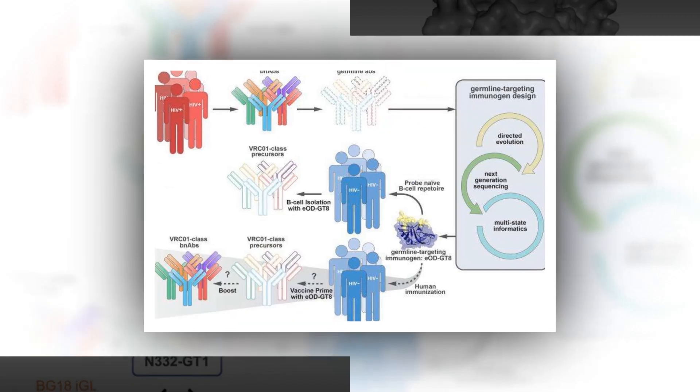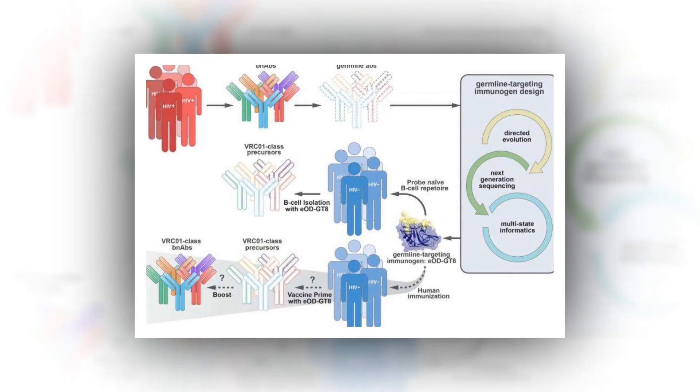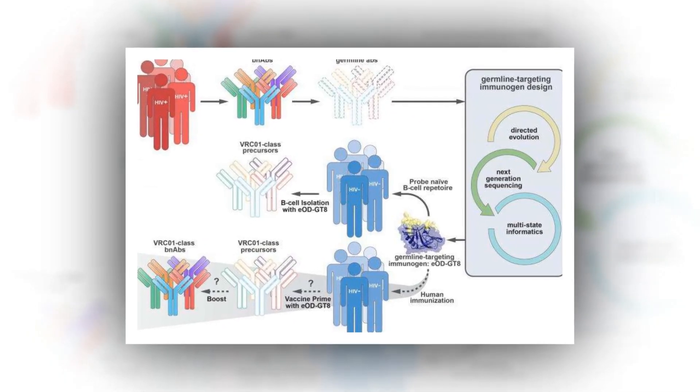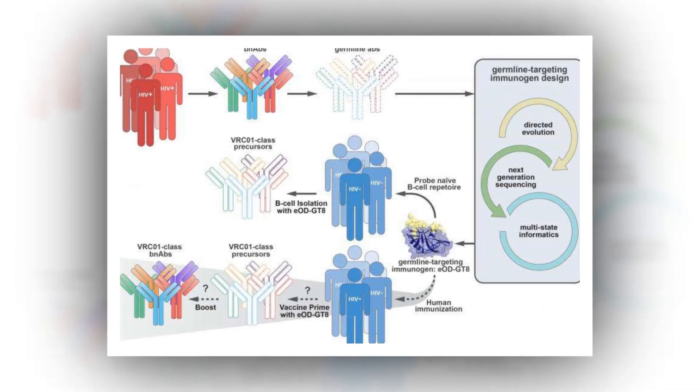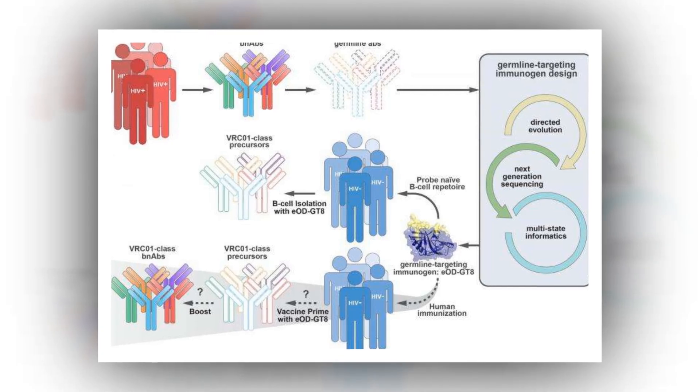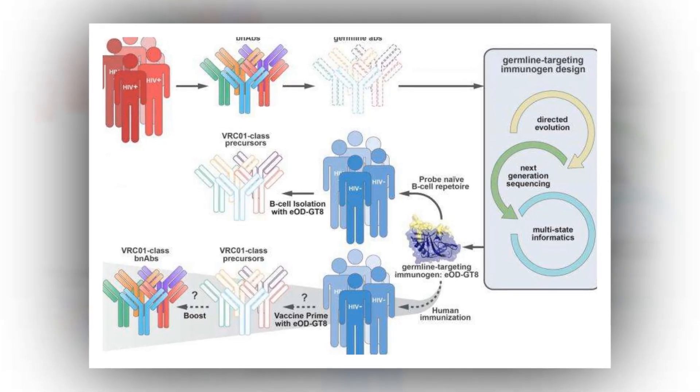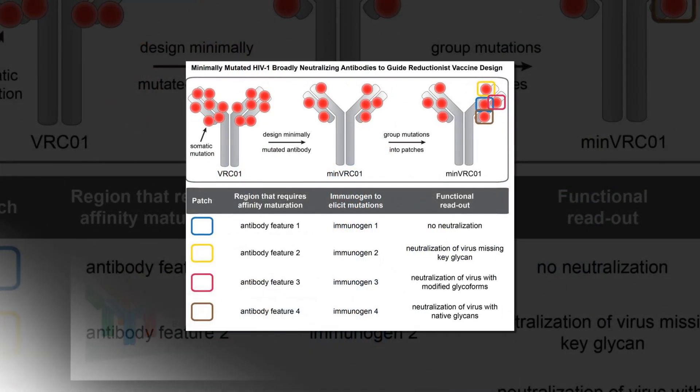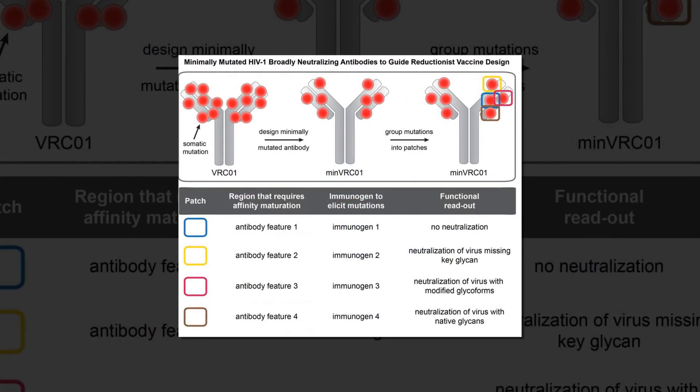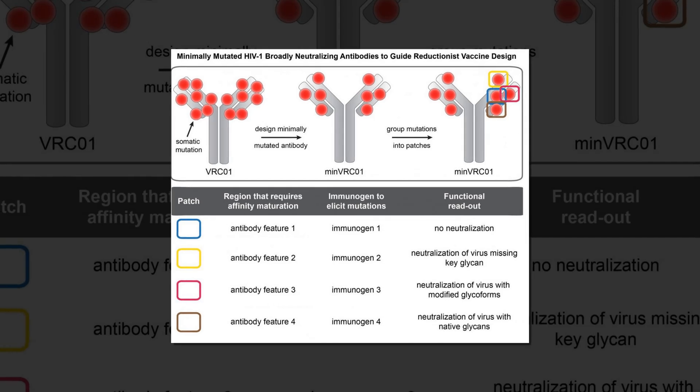Many vaccines aim to replicate the natural process of developing immunity without the risk of becoming ill. They typically contain a weakened version or pieces of a virus or other pathogen that can be recognized by immune cells. To date, no traditional vaccine candidates have been able to provide adequate protection against HIV in large trials.